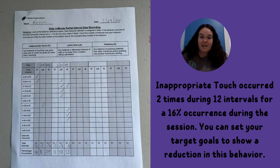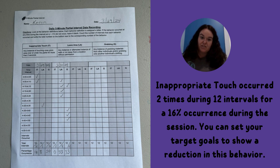To calculate the percent of occurrence, take the data sheet and divide the amount of intervals in which the behavior occurred by the total number of intervals for a percent of occurrence during the session. This is a great way to see how productive the child is being during the session.